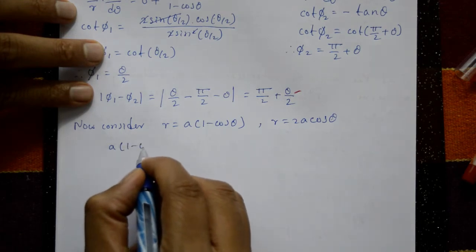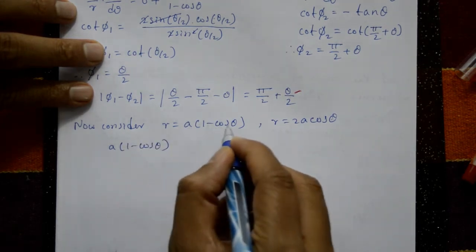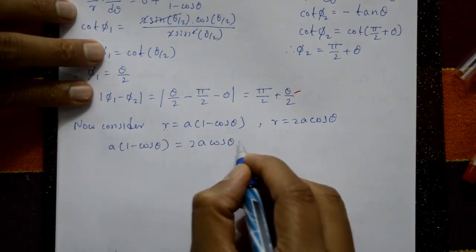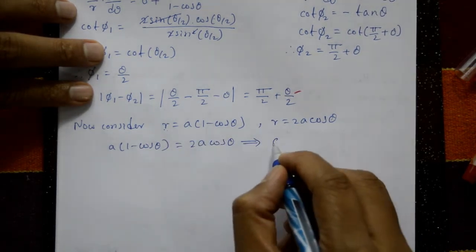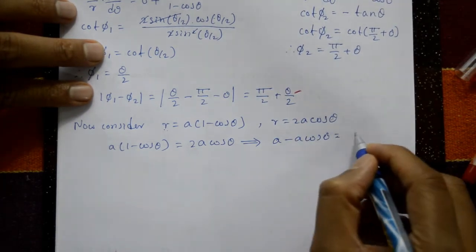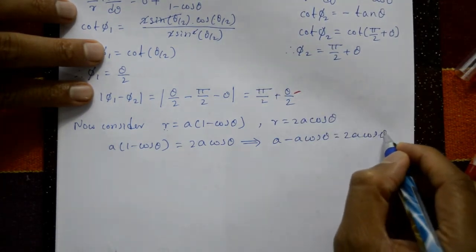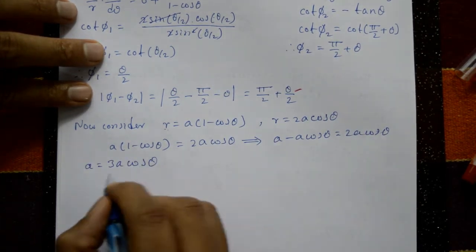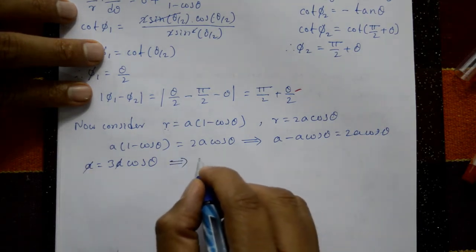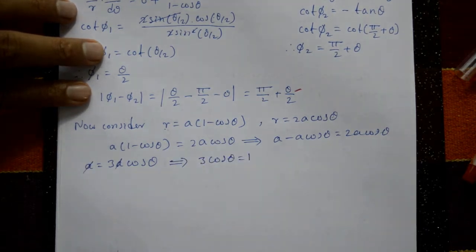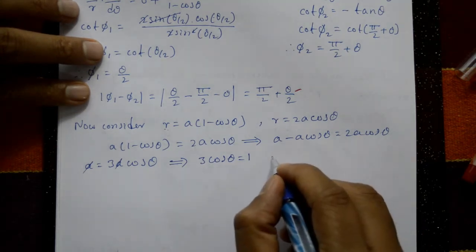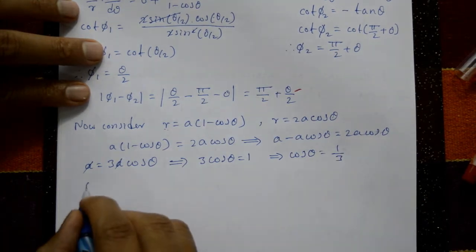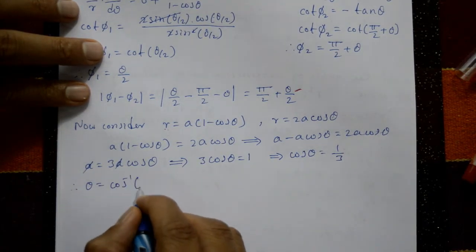Now find θ by solving the curves simultaneously. From R = a(1 − cosθ) = 2a cosθ: opening the bracket gives a − a cosθ = 2a cosθ, so a = 3a cosθ. Cancelling a: 3cosθ = 1, giving cosθ = 1/3, so θ = cos⁻¹(1/3).